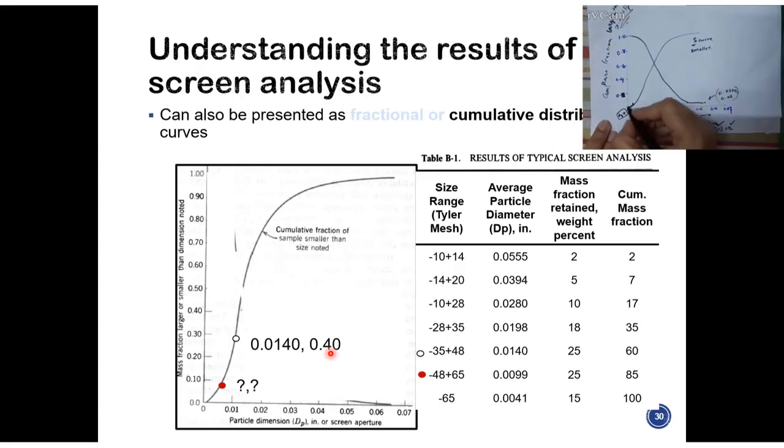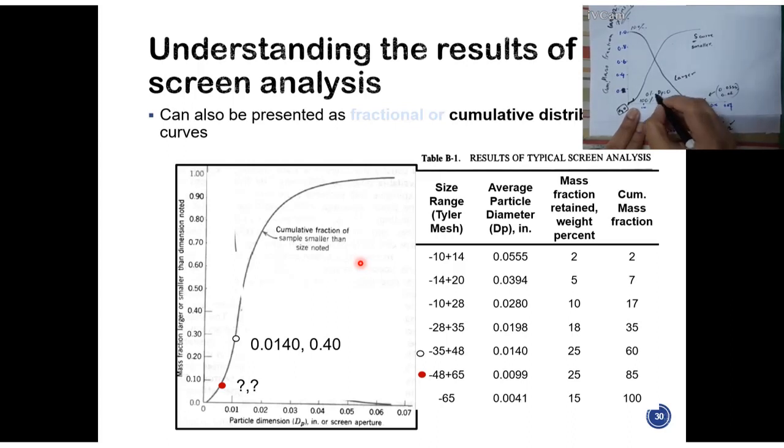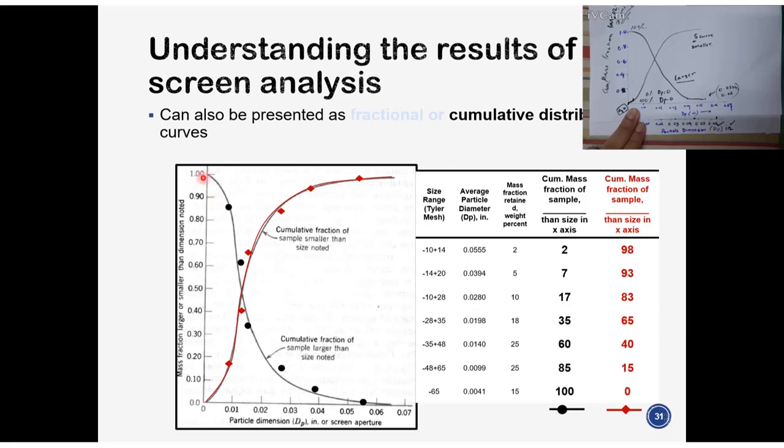This theoretical point signifies that 0% of my sample is smaller than particle diameter 0. Obviously, you can't have anything smaller than Dp 0. So that's why for this smaller curve, cumulative fraction of sample smaller than size, there is a theoretical point of 0, 0. Similarly, when you think of the larger curve that we already plotted a little bit ago, 100% of my particles are larger than Dp 0. When you have the cumulative fraction of samples larger than size, you will definitely have a theoretical point of 100%, 0. So this is a quick way to remember the shape of these two curves.